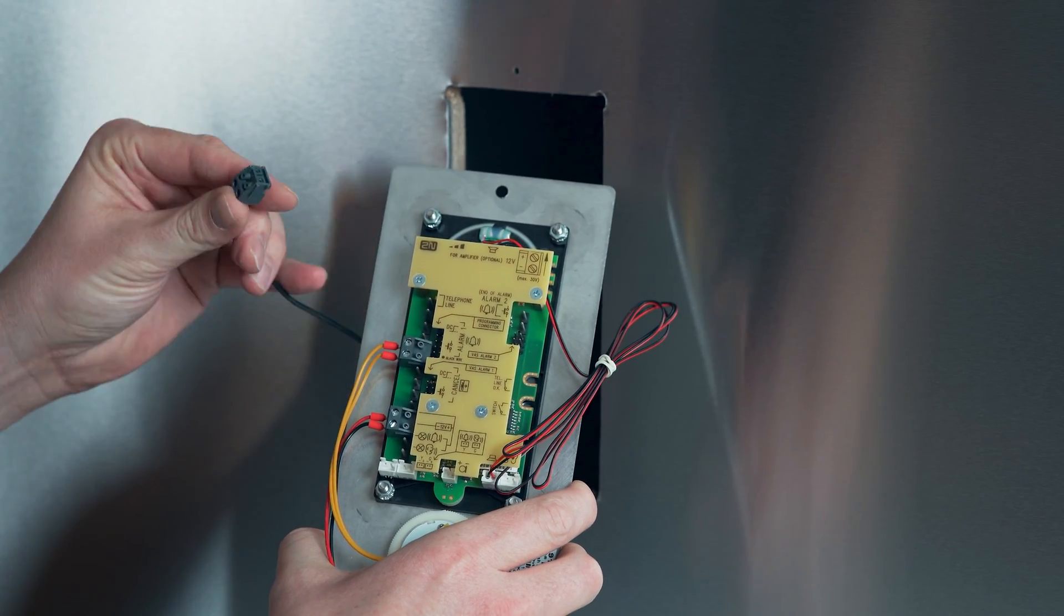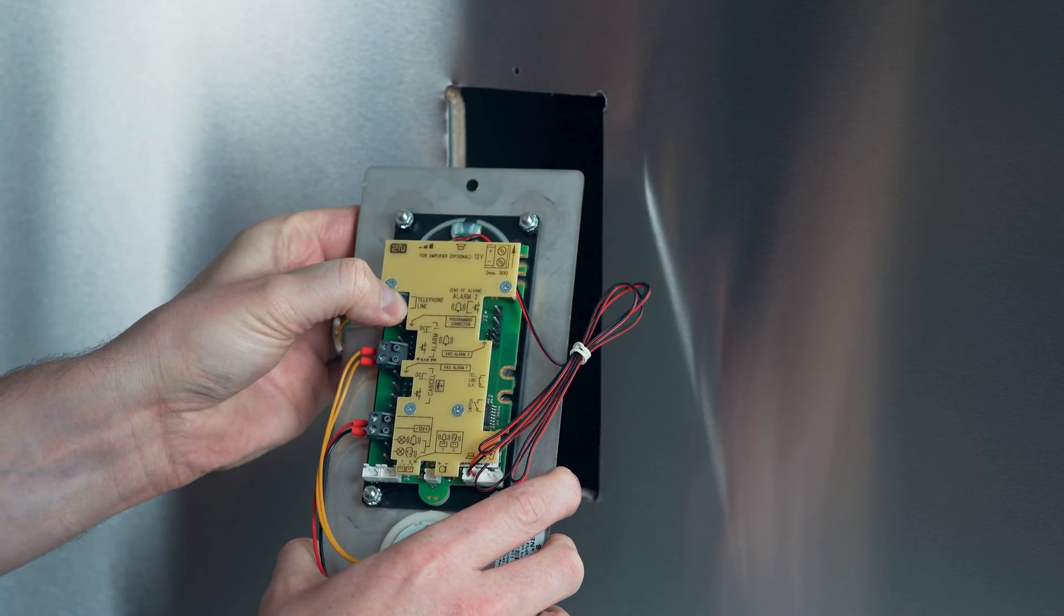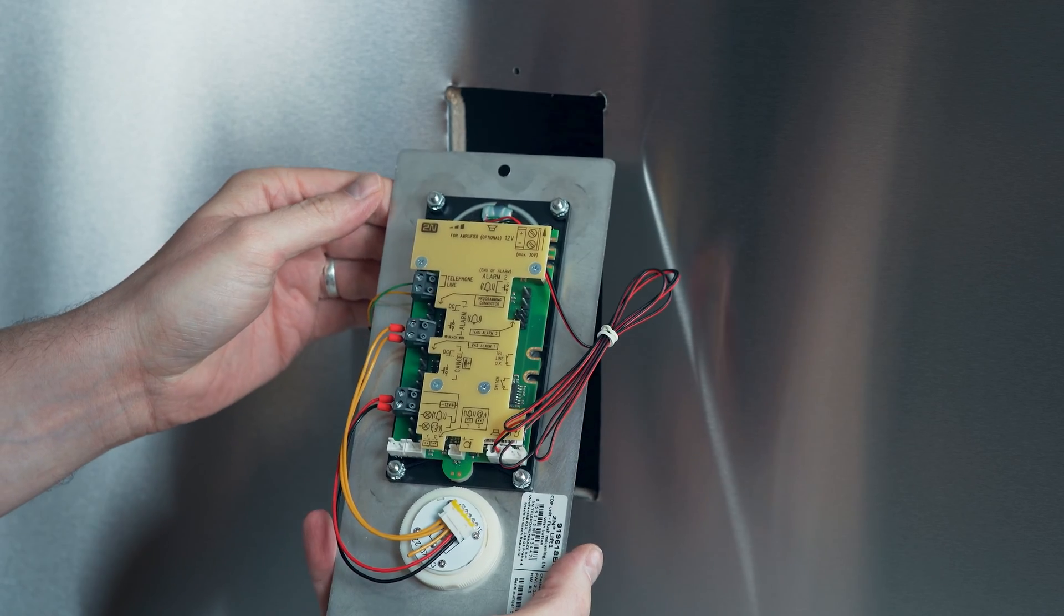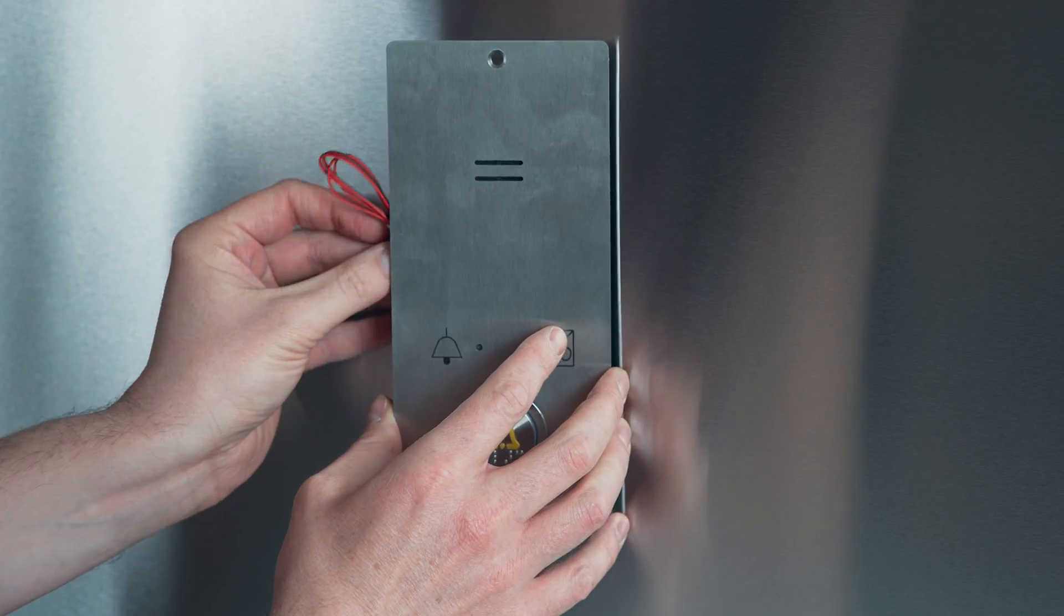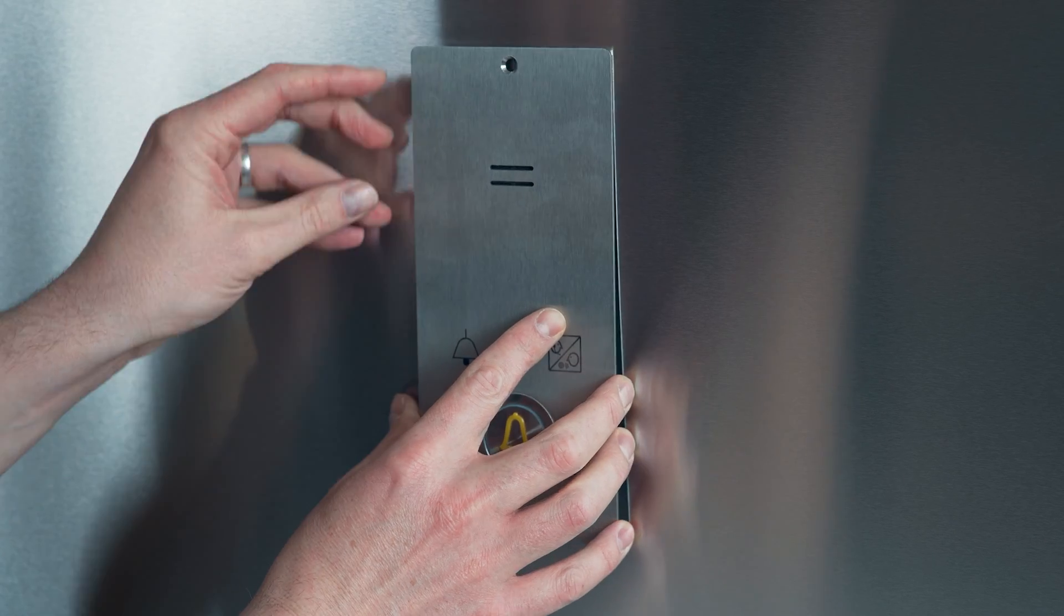Connect a two-wire to the Lift 1. Then, place the Lift 1 in the hole and screw the screws.